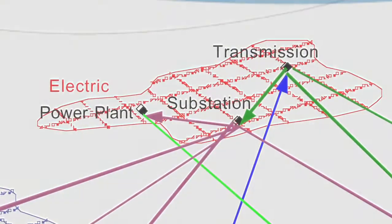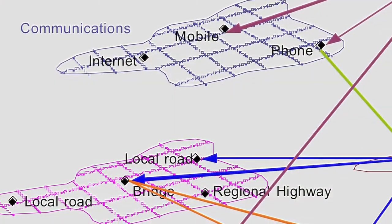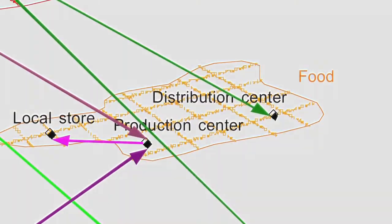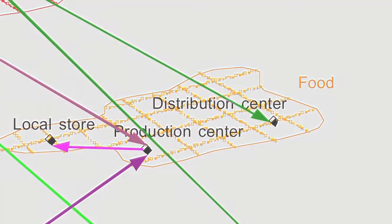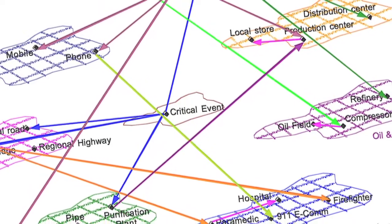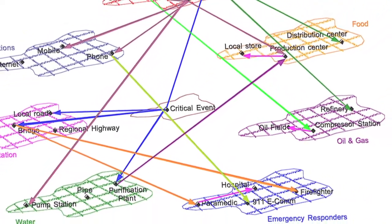It simulates multiple systems like the power network, the electrical network, and the telecommunications network. All these systems depend very strongly on each other in normal life, but this interdependence is more evident during large disasters.